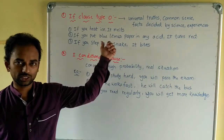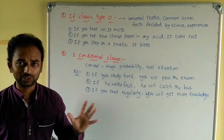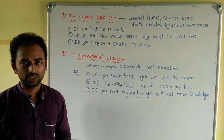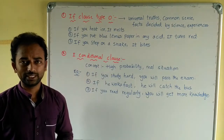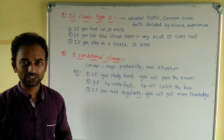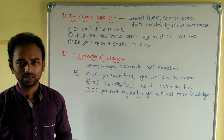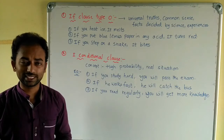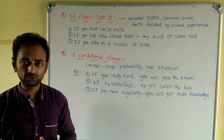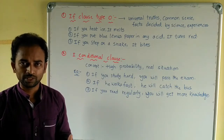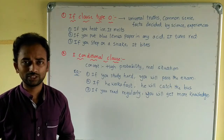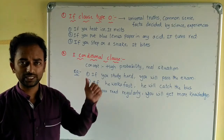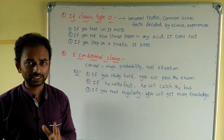There are four if conditions: type 0, first conditional sentence, second conditional sentence, and third conditional sentence. Type 0 is used when we talk about universal truths, facts decided by science, common sense situations, or common experiences.